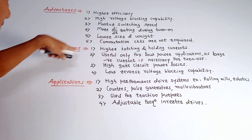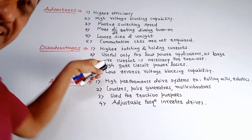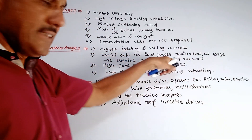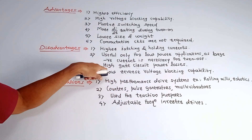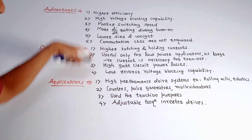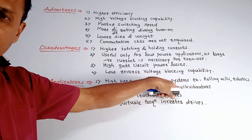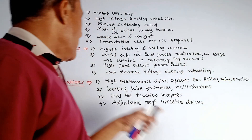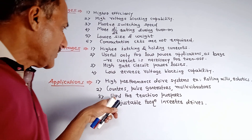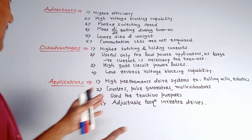Disadvantages of GTO: higher latching and holding currents, especially for lower power applications, because a large negative current is necessary to turn off GTOs. There are also high gate circuit power losses and low reverse voltage blocking capability. Applications include high-performance drive systems such as rolling mills and robotics, multivibrators, counters, pulse generators, traction purposes due to lighter weight, and adjustable frequency inverter drives.